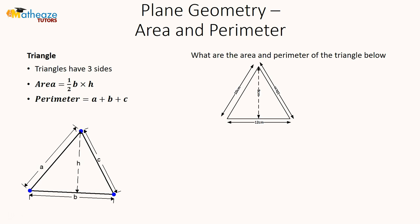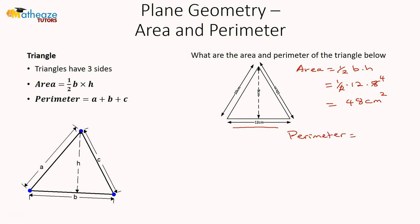Let's find the area of this triangle. Area is one half base times height. Our base is 12 and height is 8: one half of 12 times 8 gives us 48 square centimeters. The perimeter is the sum of all the sides: 10 plus 10 plus 12, which gives us 32 centimeters. This is how you deal with area and perimeter of plane shapes.